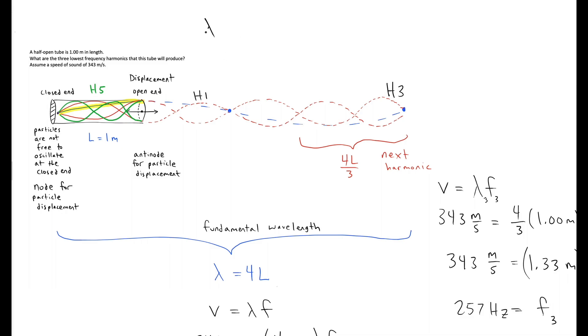We'll have then that the wavelength of H5 is going to be 4/5 L. So this is going to be 4/5 times 1 meter, which is 0.8 meters.